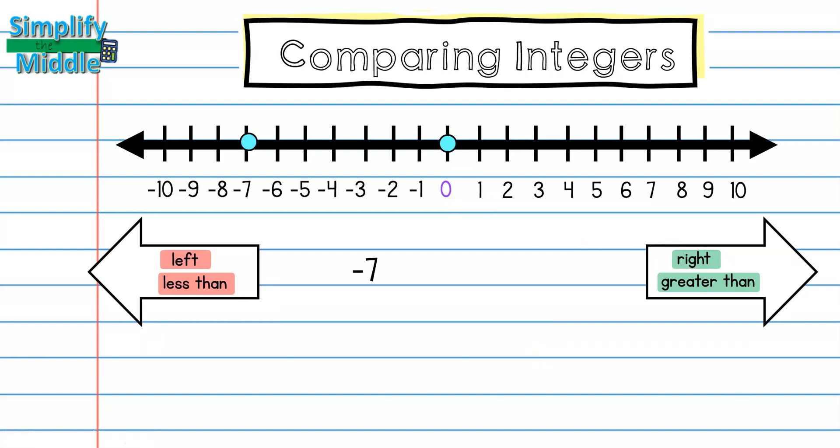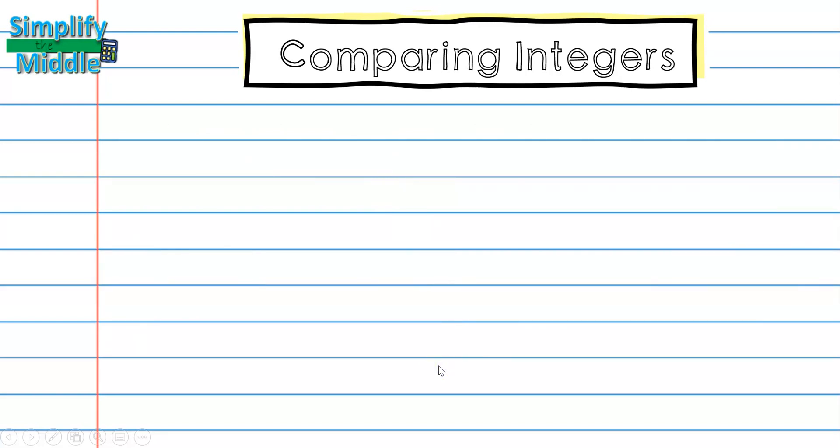Here I have negative 7 and 0. I can see that negative 7 is to the left of 0. So negative 7 is less than 0. Let's do some more examples.